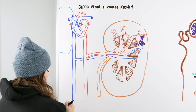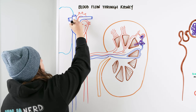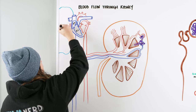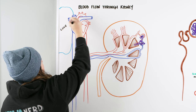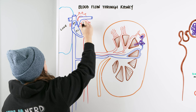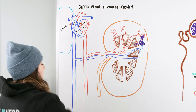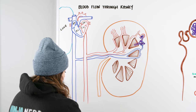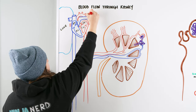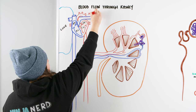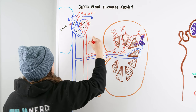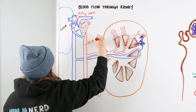Starting with the heart: blood goes from the right atria to the right ventricle, out to the lungs, back through the left atria, left ventricle, and then out. As we exit the heart, we come out through the aorta — specifically our descending aorta, also known as the abdominal aorta.